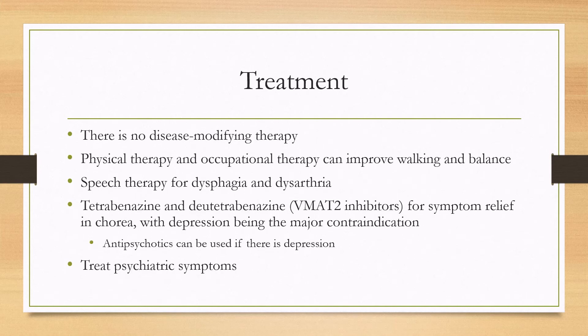For treatment, there is no specific disease-modifying therapy. However, physical therapy and occupational therapy in a multidisciplinary setting can improve walking and balance, and speech therapy is useful for dysphagia and dysarthria. For symptom relief of chorea, you can use tetrabenazine or deutetrabenazine — these are VMAT2 inhibitors, or dopamine depleters. The major contraindication, however, is depression, which is fairly common in Huntington disease.